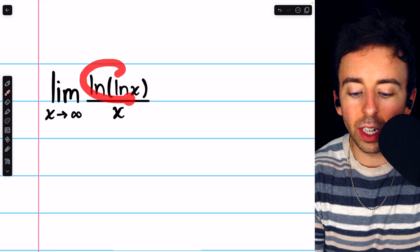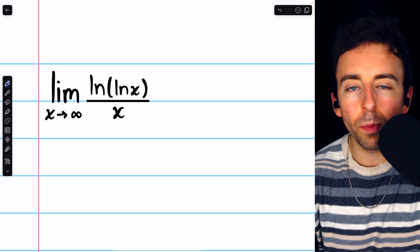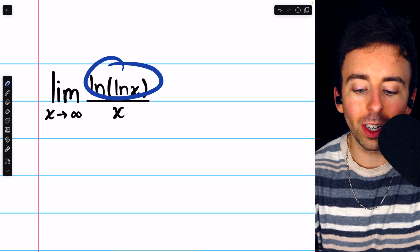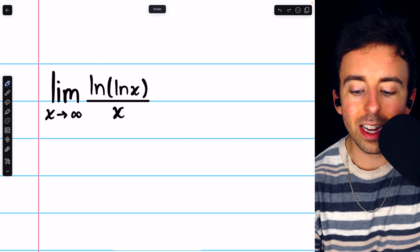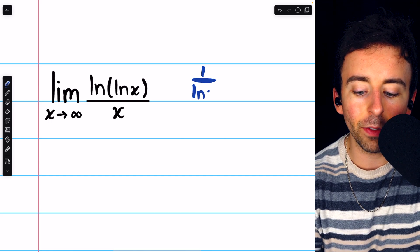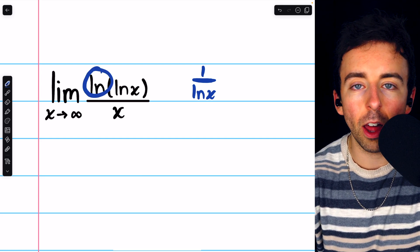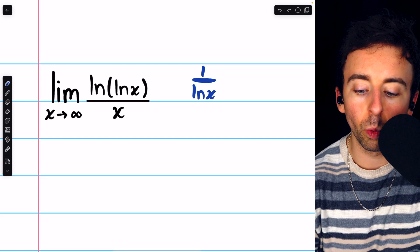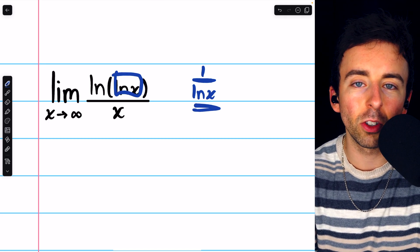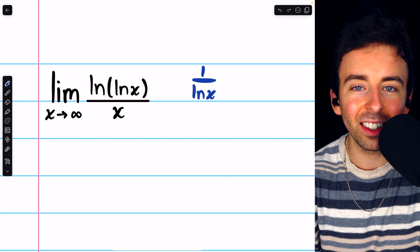Beginning with the derivative of the numerator, the natural log of the natural log of x, we have to apply the chain rule. The chain rule tells us that the derivative of a composite function like this will first be the derivative of the outside function, leaving the inside function unchanged. In this case, the outside function is natural log, whose derivative is 1 divided by the input. Remember, we want to leave that input, that inside function, unchanged. In this case, the inside function happens to be lnx.